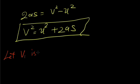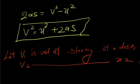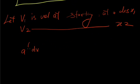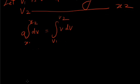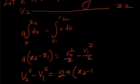If v1 is the velocity at displacement x1 and v2 is the velocity at displacement x2, then integrating a dx from x1 to x2 equals integrating v dv from v1 to v2. This gives a into x2 minus x1 equals v2 squared by 2 minus v1 squared by 2, or v2 squared minus v1 squared equals 2a into x2 minus x1. This is the general form of the third equation of motion.